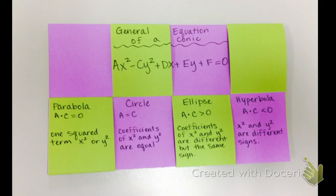If x squared and y squared have the same sign but are different coefficients, different numbers, then it has to be an ellipse.